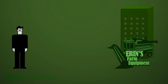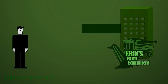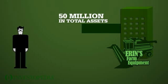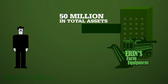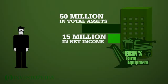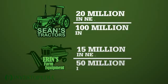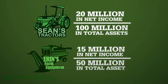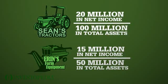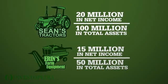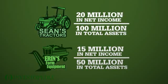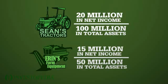Aaron's Farm Equipment is half the size. With $50 million worth of assets, it earned $15 million last year. To calculate ROA, Andy divides the net income of each company by its total asset value.